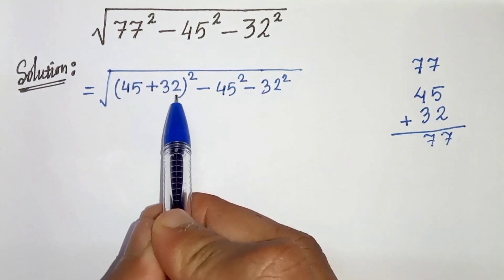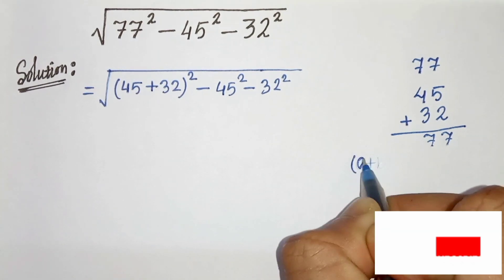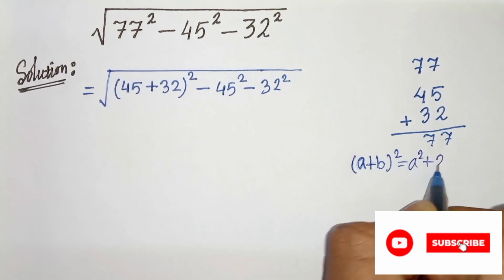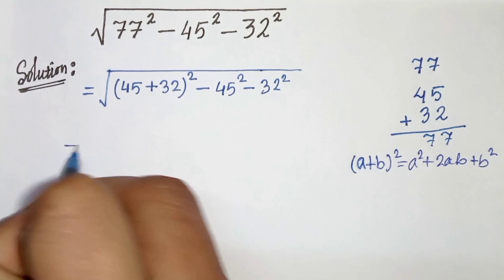This is a plus b whole square and we know that a plus b whole square can be written as a square plus 2ab plus b square.